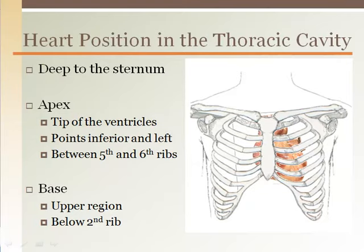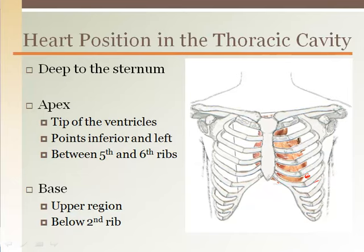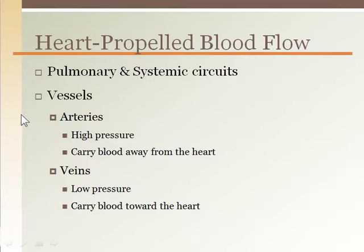The heart is located beneath the sternum inside the ribcage. The apex is the pointy inferior portion — it tips down and leftward and is located in the fifth intercostal space, between the fifth and the sixth ribs. The base is on top of the heart where the vessels enter and exit, located below the second rib.